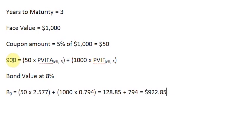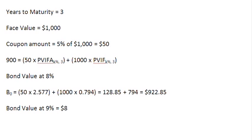$922.85 is still higher than the $900 we want. So to further reduce the value from $922.85 to $900, we need a still higher discount rate. Let us resolve for the bond value at 9%. If you find the value of the bond at 9%, you get $898.55 — you can verify this on your calculators. So at 8% the bond value is above $900, and at 9% it is below $900. Therefore, the YTM lies between 8% and 9%.